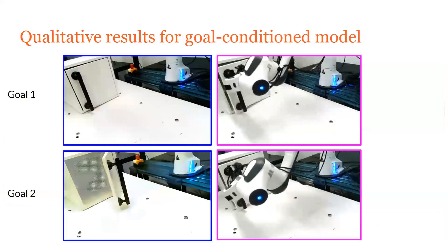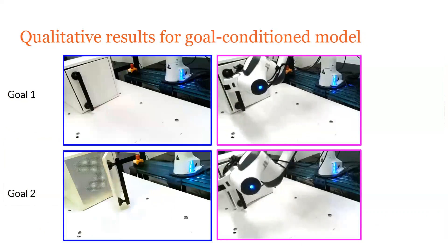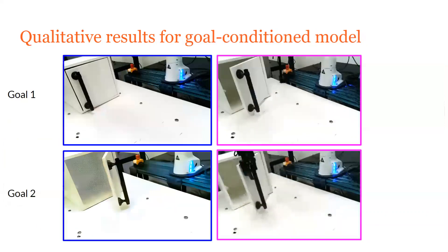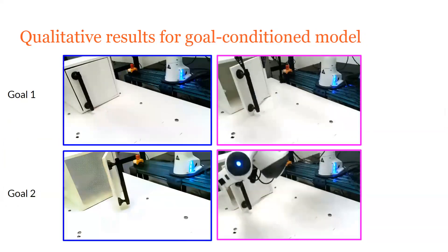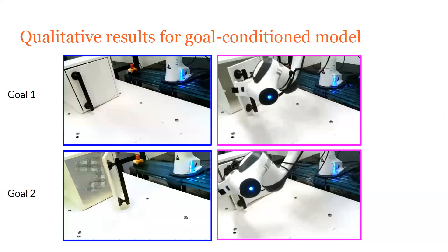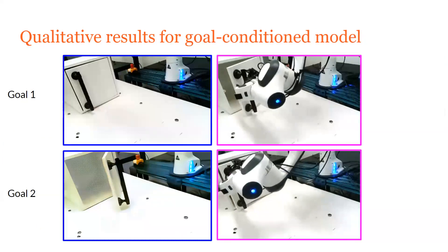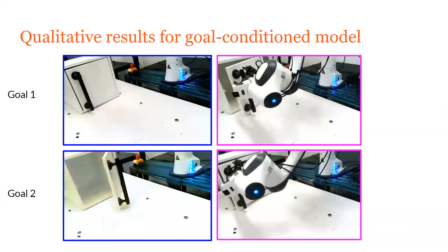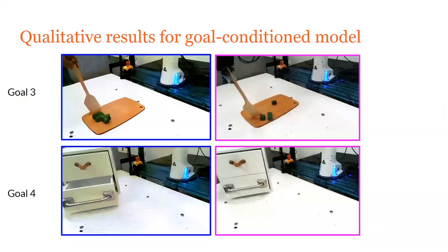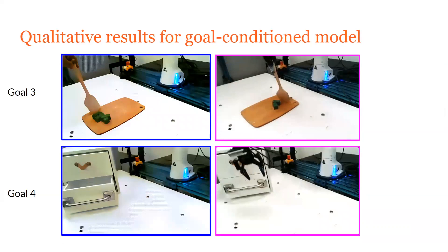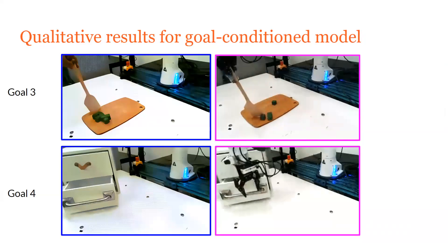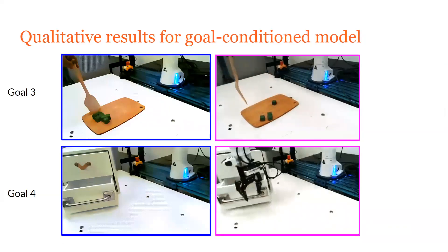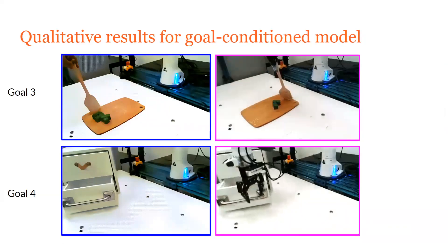Now let's look at some results for the goal-conditioned model. Here we feed in a goal image shown on the left along with an initial image of the scene. We can see that the different plausible manipulations correspond to bringing the objects to the desired goal locations.